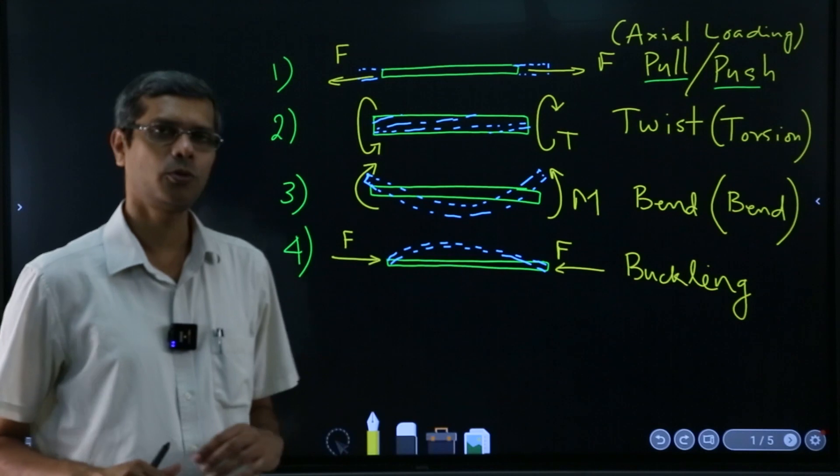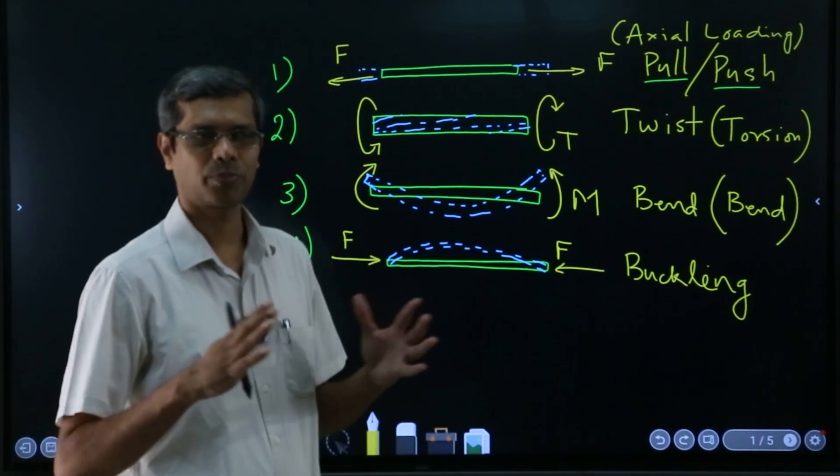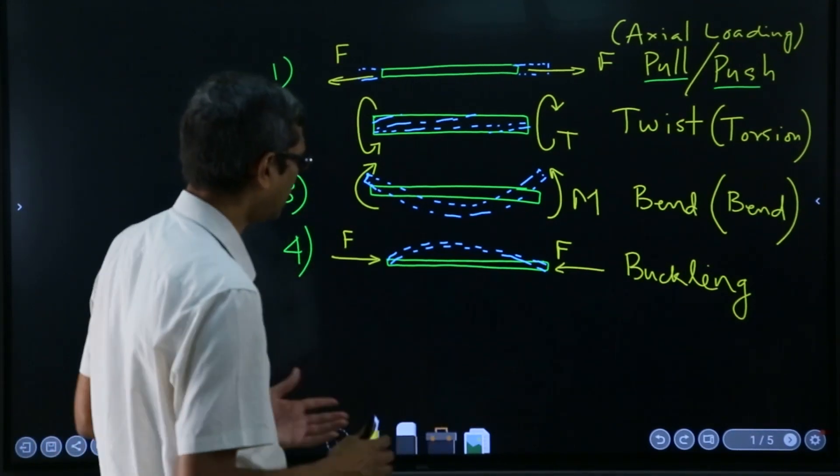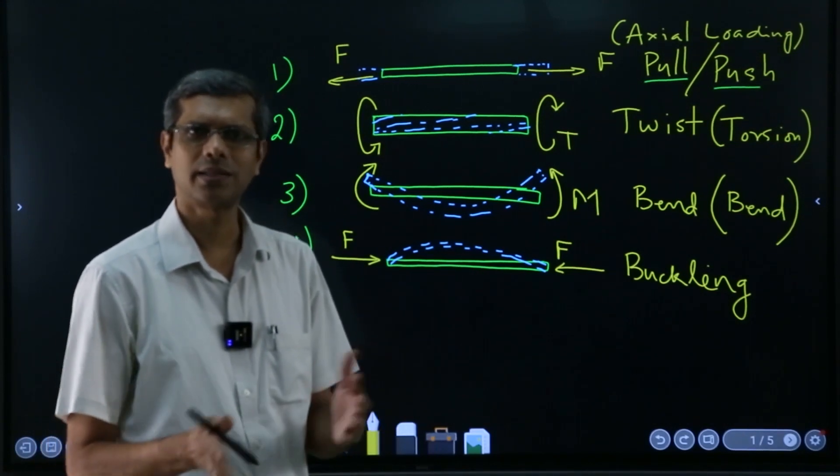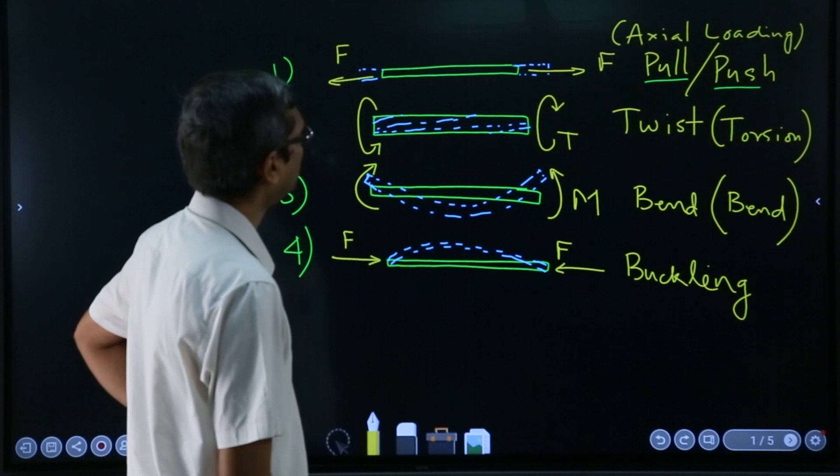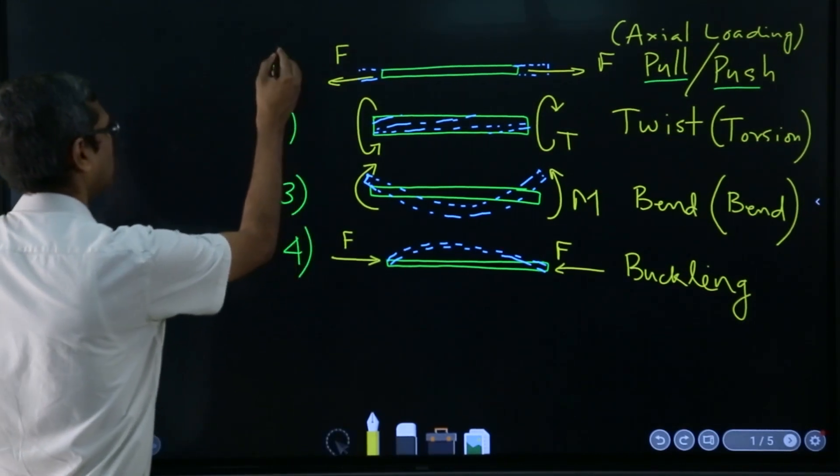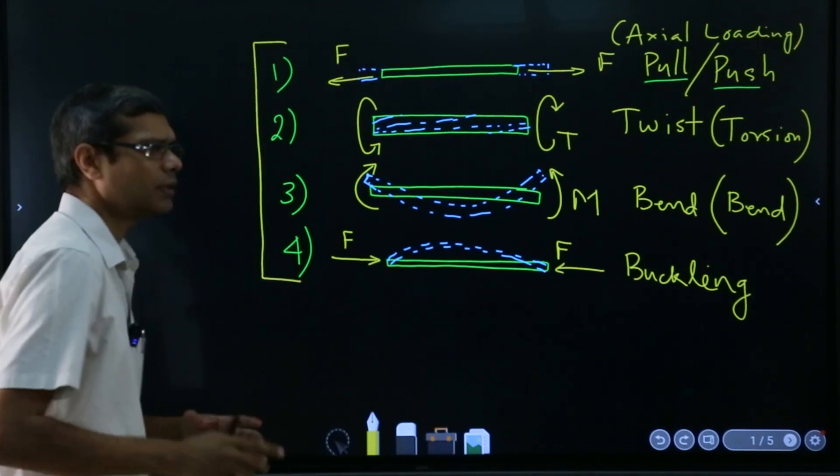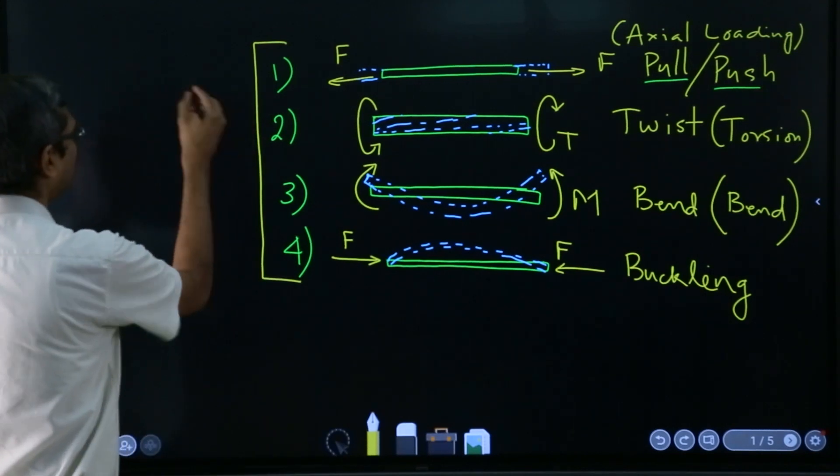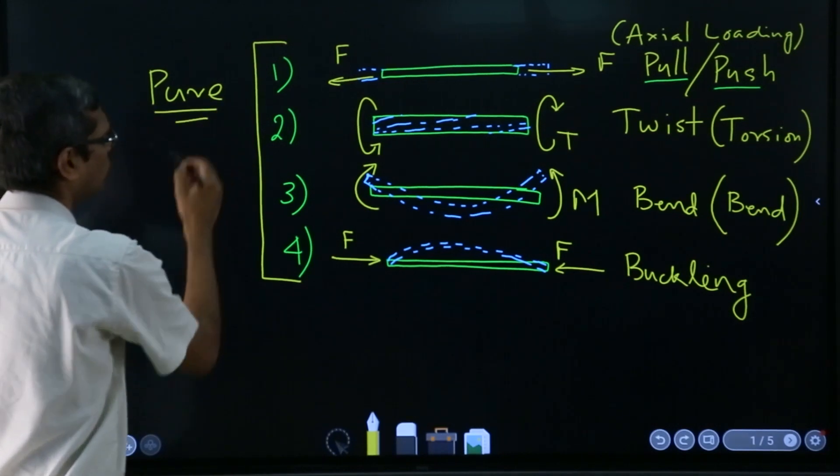These are the major four types of deformation we are going to study in this full subject of strength of material. Some books are named mechanics of material, some are strength of material—does not matter. These are the primary things.